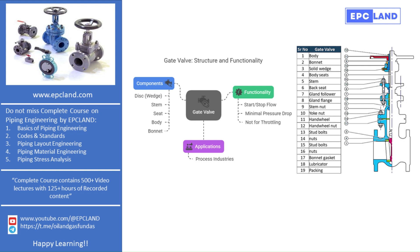Let's begin by understanding what a gate valve actually is. A gate valve is a device used in pipelines to start or stop the flow of fluid. It uses a gate-like disc which moves up and down, cutting across the flow path to either allow fluid to pass or to stop it completely. It is called a gate valve because the disc works just like a gate or a barrier.